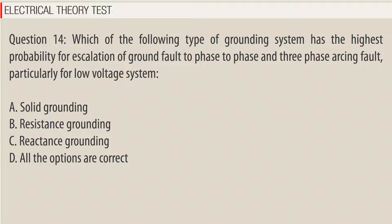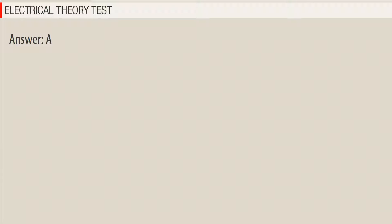Question 14: Which of the following types of grounding system has the highest probability for escalation of ground fault to phase-to-phase and three-phase arcing fault, particularly for low-voltage systems? A. Solid grounding, B. Resistance grounding, C. Reactance grounding, D. All the options are correct. Answer: A.